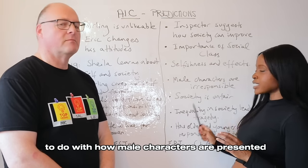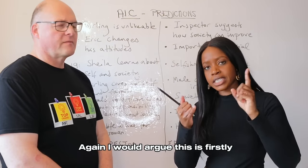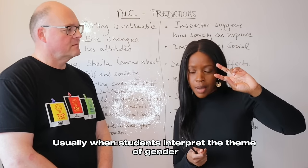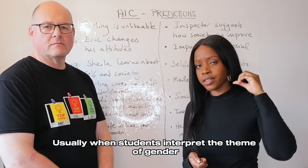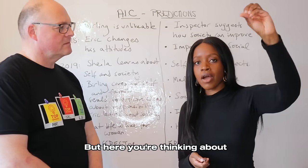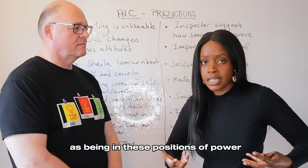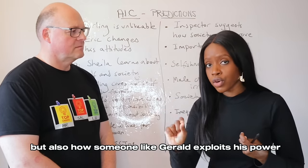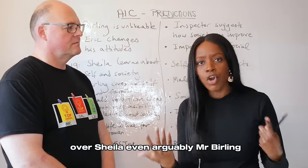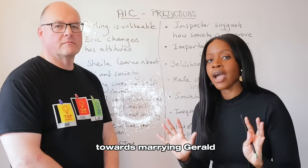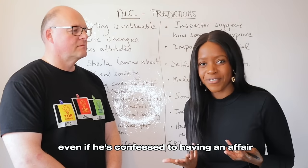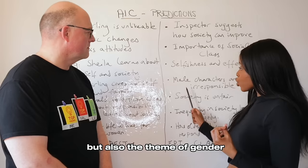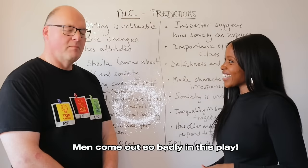The 2020 theme question was how male characters are presented as irresponsible. First, this is a social responsibility question — male characters exploit their power — but it's also a gender question. Students usually interpret gender in terms of the women, but here you think about how the men hold positions of power and exploit that power over Eva and Daisy, but also how Gerald exploits his power over Sheila, and how Mr. Birling pushes his daughter towards marrying Gerald even after Gerald confessed to having an affair. You can talk about both social responsibility and gender.